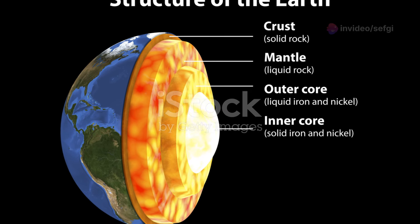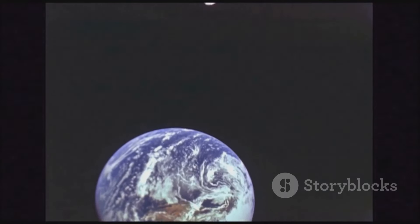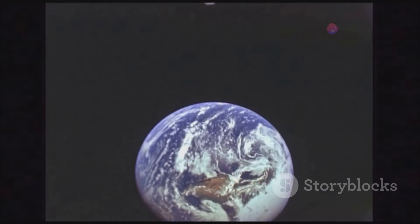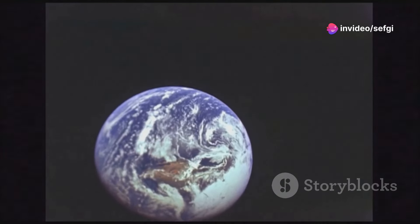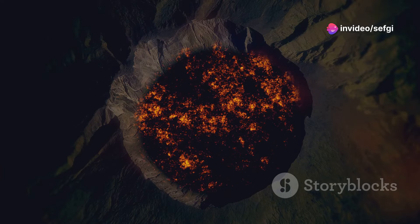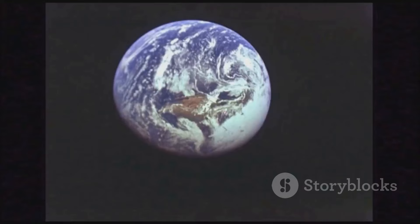These metals have melting points well above a thousand degrees Celsius. But here's the kicker. The temperature at the center of the Earth is estimated to be around 5,400 degrees Celsius. That's as hot as the surface of the sun. At this scorching temperature, the metals melt and form a sea of liquid metal.